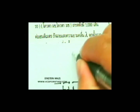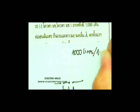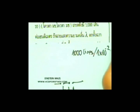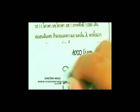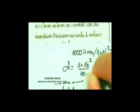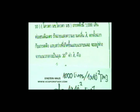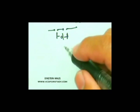นี่คือระยะ d เราต้องคำนวณหาระยะ d ก่อนว่าเท่าไหร่ 1,000 เส้นต่อ 1 เซนติเมตร คือ 10 ลบ 2 เมตร หารด้วย 1,000 ก็จะได้ระยะ d